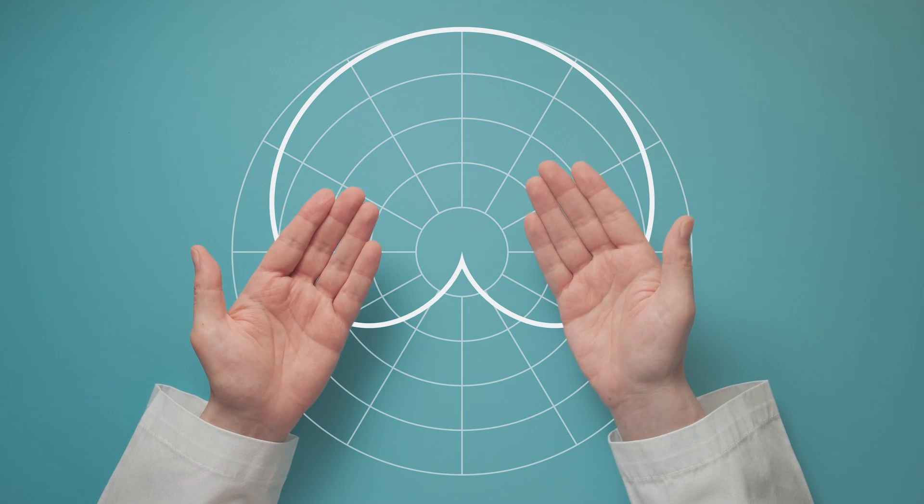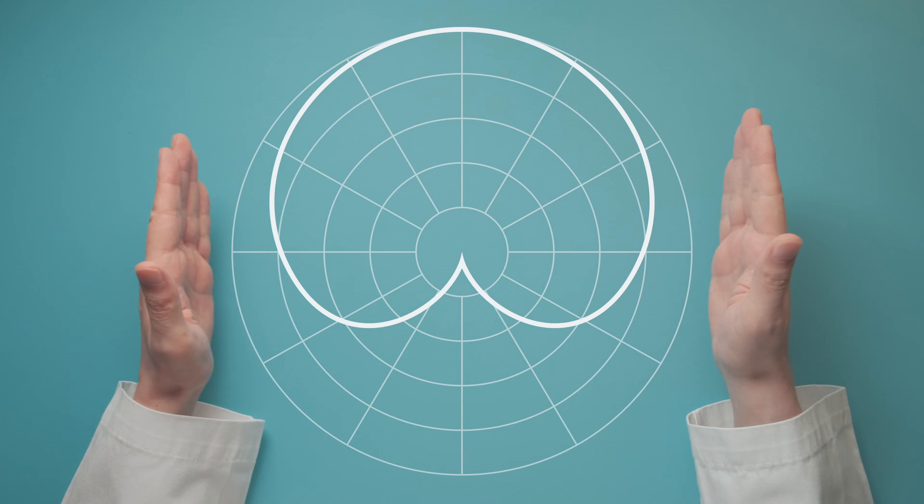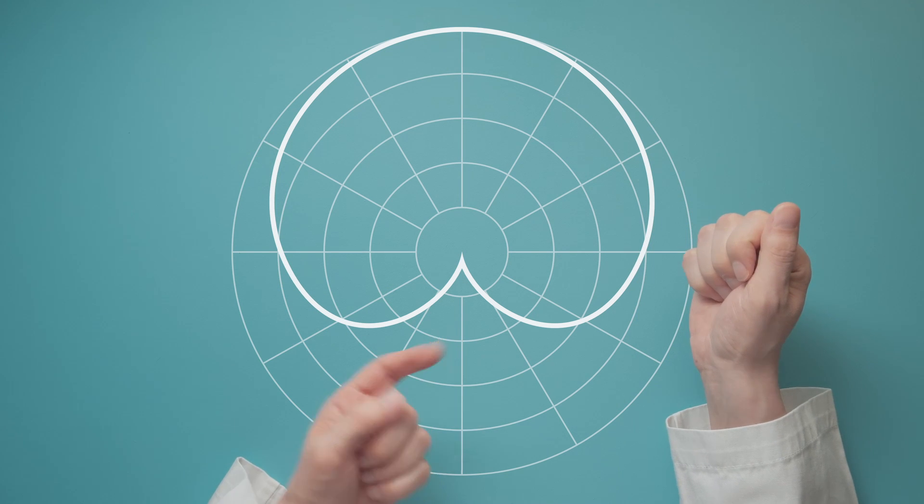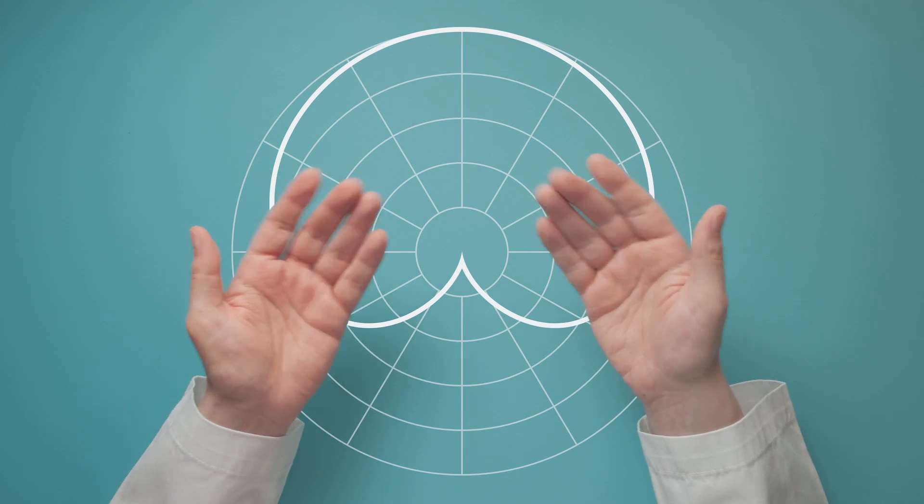The cardioid polar pattern is the most common one. A little less sensitive on the sides, with a good rejection from the rear of the microphone. Now let's see how we can use that to our advantage.